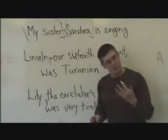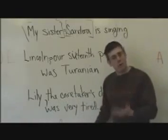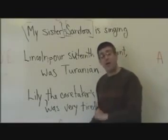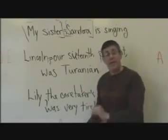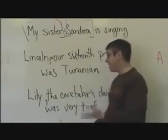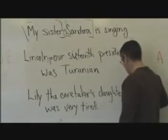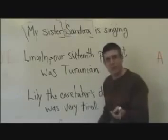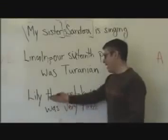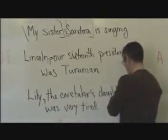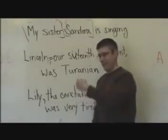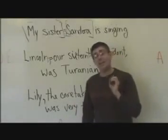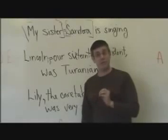The only way this could be different would be if there really were two Lilies in play — for example, 'Lily the caretaker's daughter was very tired, but Lily the farmer's daughter was very perky.' In that situation, 'the caretaker's daughter' would be restrictive and would not be set off with commas, because you're distinguishing between two Lilies. But that would be a very unusual situation. Normally, if you begin a story with 'Lily, the caretaker's daughter,' there's only one Lily in play, and 'the caretaker's daughter' is a non-restrictive appositive set off with commas.